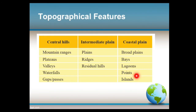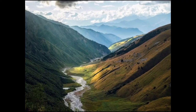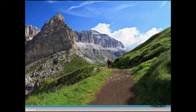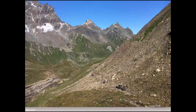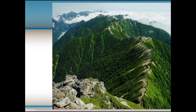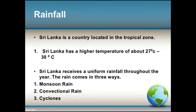Point Pedro is an example of a point. Islands — examples include Mannar and Delft. This picture shows a valley — this is the valley area. This picture shows a gap — this is the gap. This picture also shows a gap. This is a mountain ridge — this is the ridge.